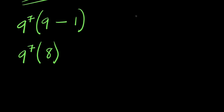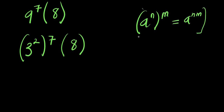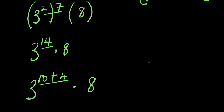Now, nine is a perfect square: nine equals three to the power two. So nine to the power seven equals three to the power two, raised to the power seven, times eight. Applying the identity a to the power n raised to the power m equals a to the power n times m, we get three to the power fourteen times eight.